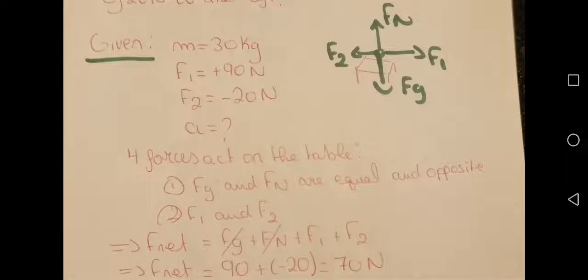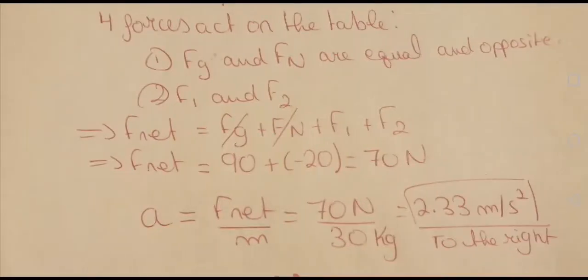We calculate the net force: Fnet = Fg + Fn + F1 + F2. Fg and Fn cancel each other because they are opposite in direction and equal in magnitude, leaving F1 and F2. F1 = 90 N and F2 = −20 N, so the net force equals 70 newtons. Then acceleration = net force / mass = 70 N / 30 kg = 2.33 m/s² to the right, because the direction of acceleration is in the direction of the net force.